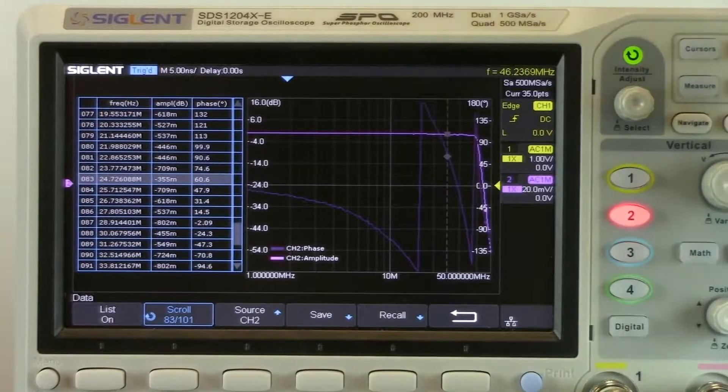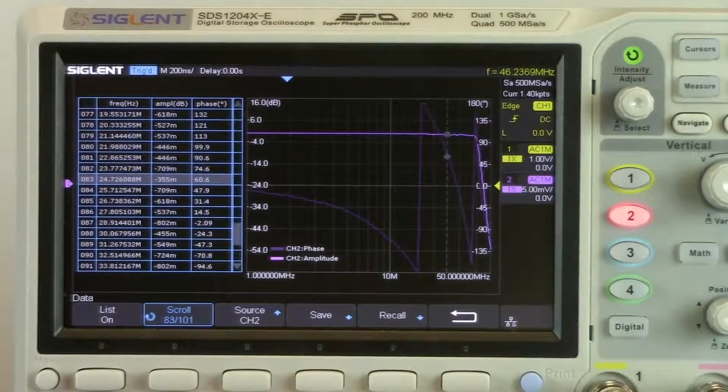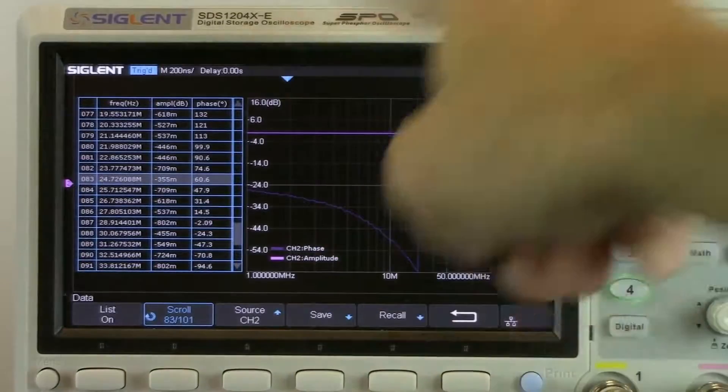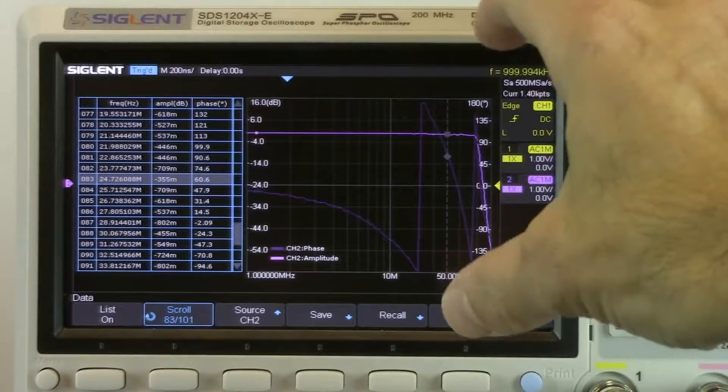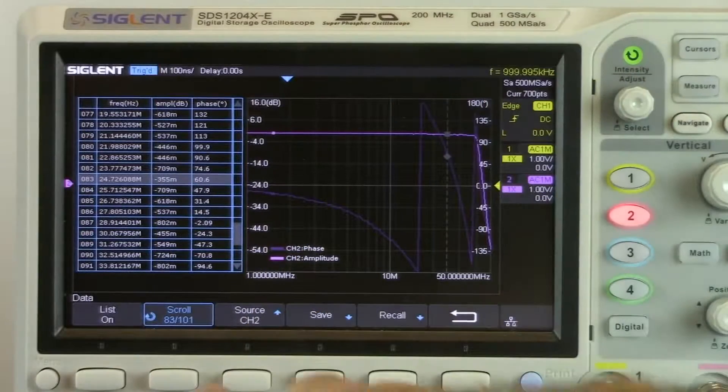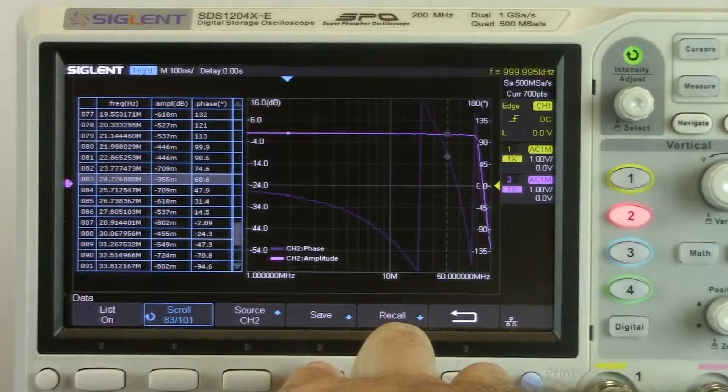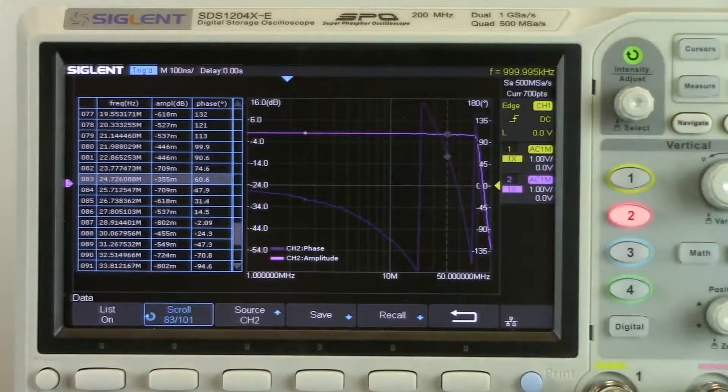And with this oscilloscope, we can put a USB stick in the front panel, press the print key—that's going to push a bitmap image or a picture image of this particular display right to the USB, or we can save as a CSV file to use that data elsewhere.